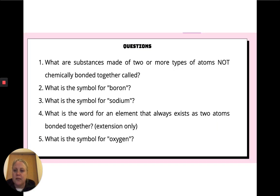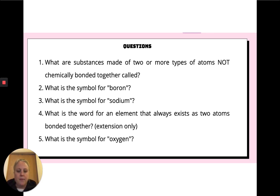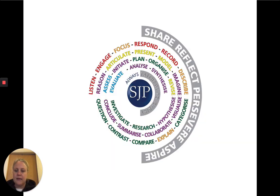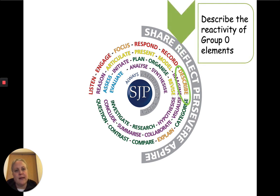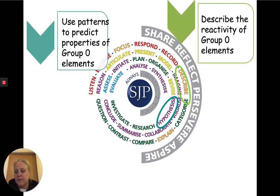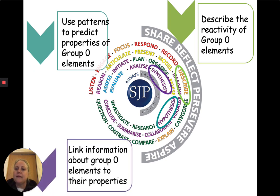Before we get started, here's a little bit of retrieval practice. Stop the video whenever you need to complete the task. Pause now and have a little go at these five questions. Once you've had a go, here are the answers. Today we're looking at: describing the reactivity of the group zero elements, using patterns to predict properties of the group zero elements, and linking information about group zero elements to their properties.